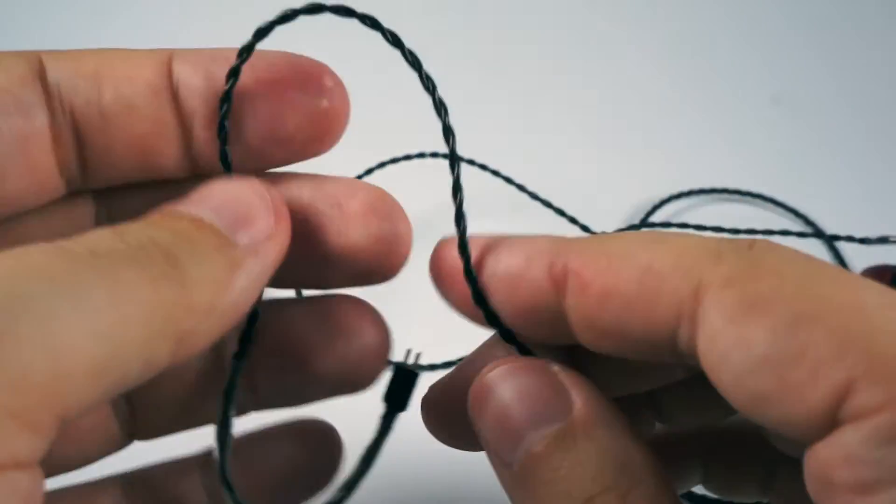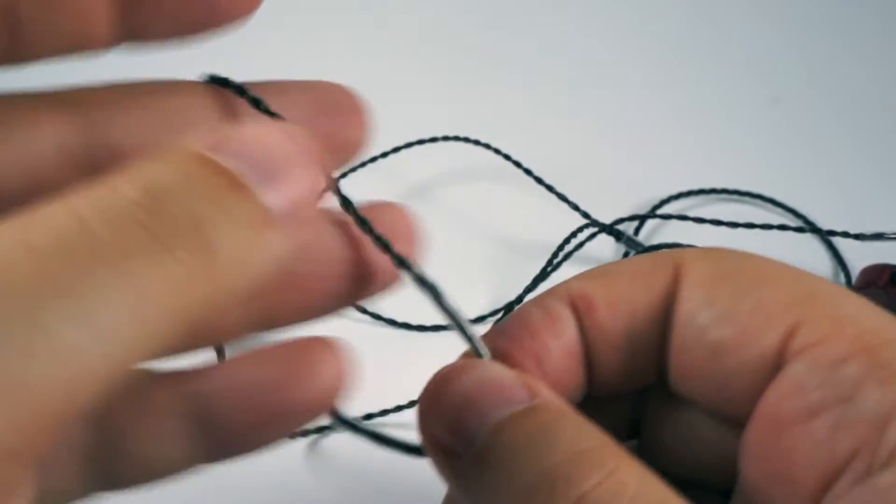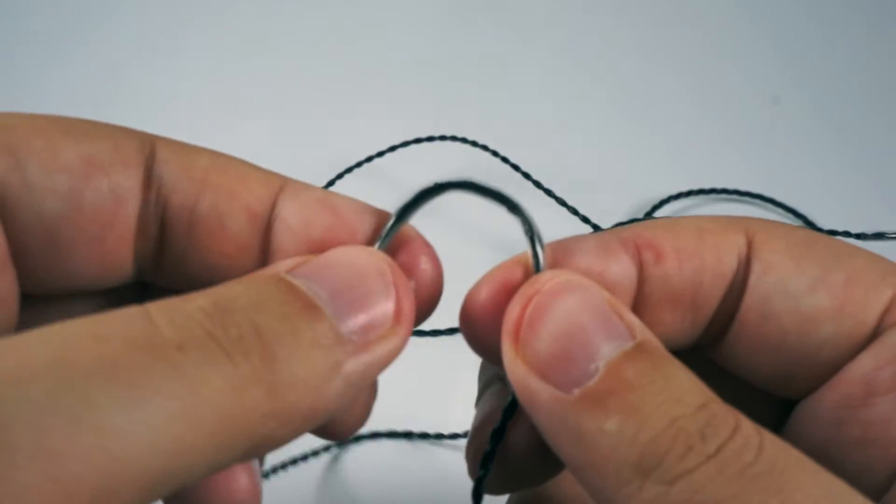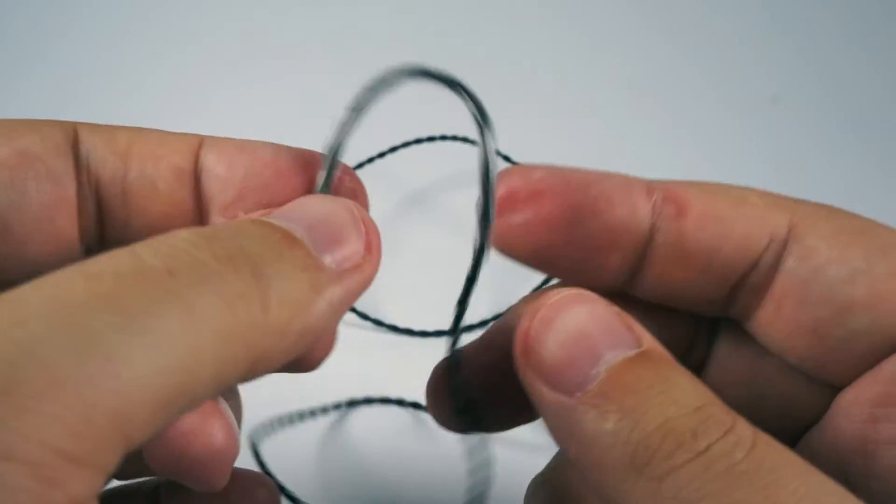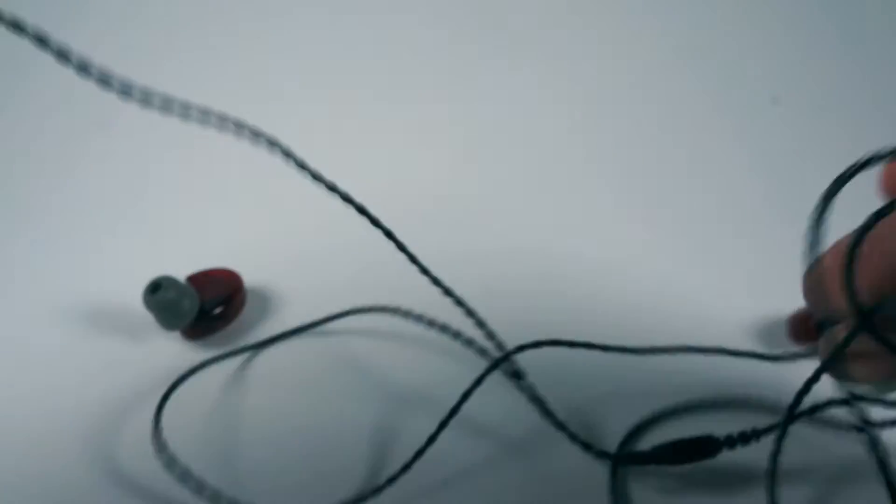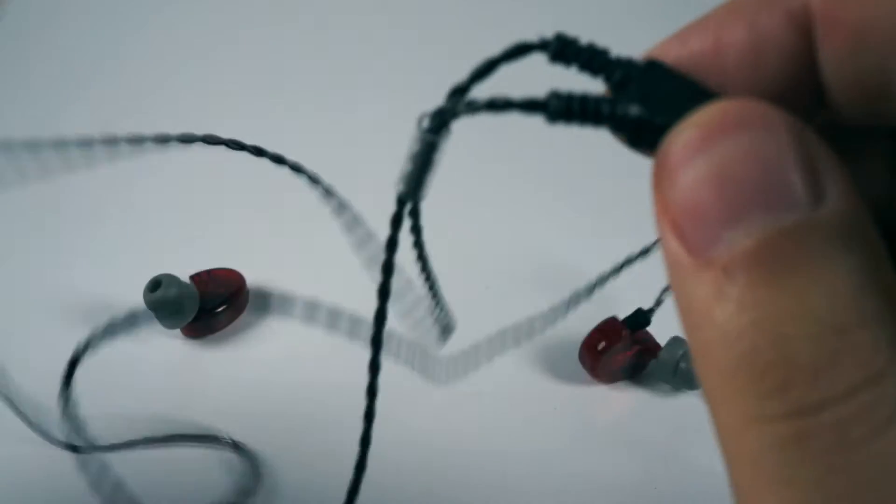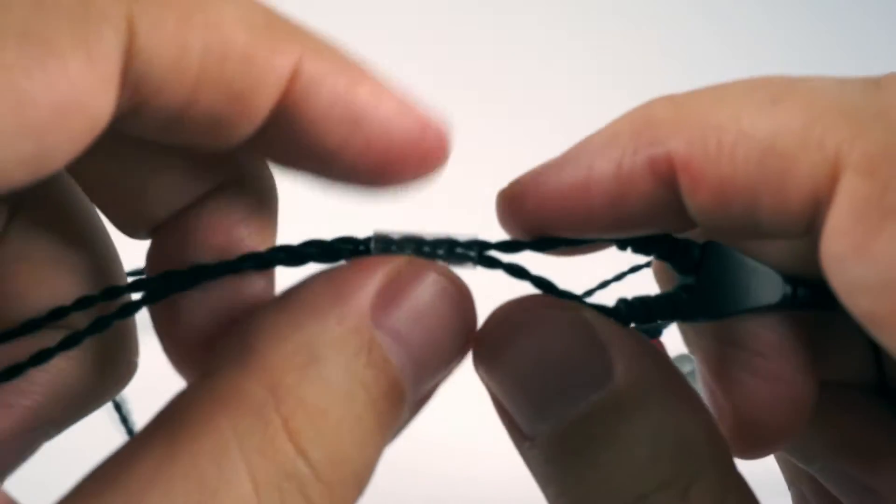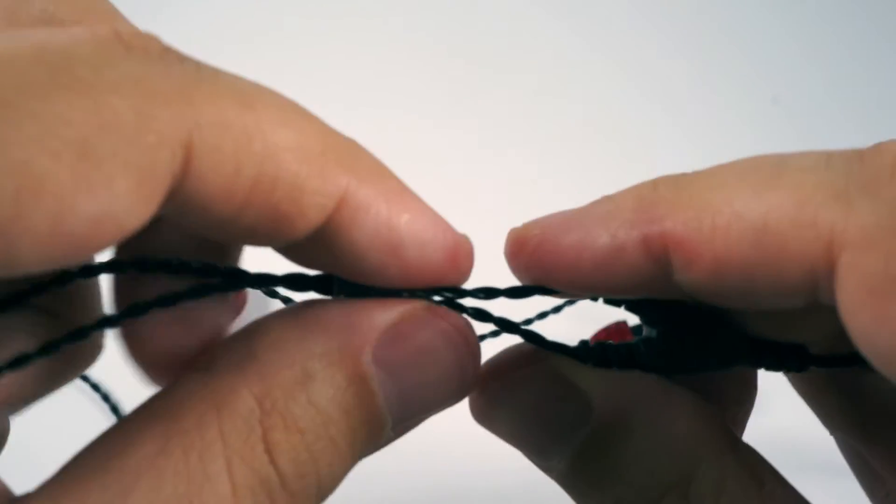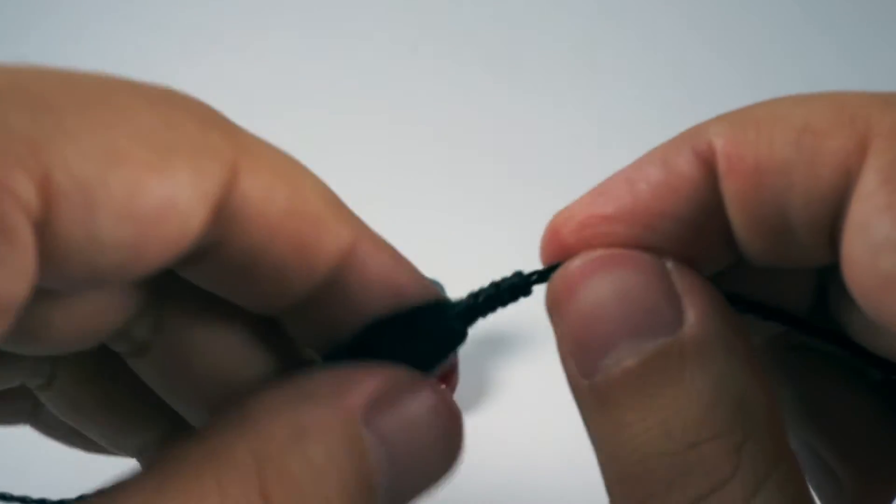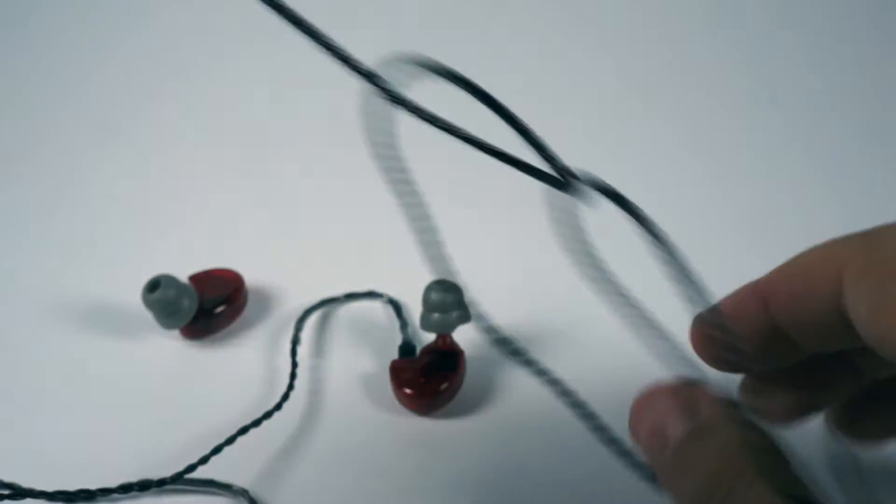It's soft, very comfortable. It has this part with memory effect, so you can bend it forming ear hooks for comfortable wear. So here is the splitter. Simple transparent tube used as a chin slider. Splitter is pretty sturdy.